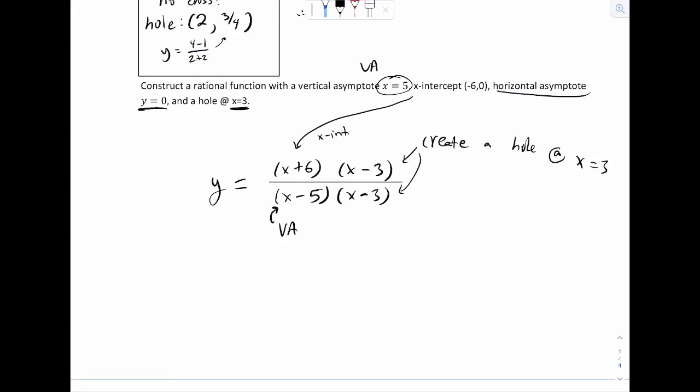So think about how that would happen. In order for that to happen, that would mean on your function, the degree on the top and bottom, think about what has to happen. That would mean this degree at the bottom has to be larger than the top. So if I look at my function here, the degree at the top is 2, and this is 2, which means 0 is not going to happen.